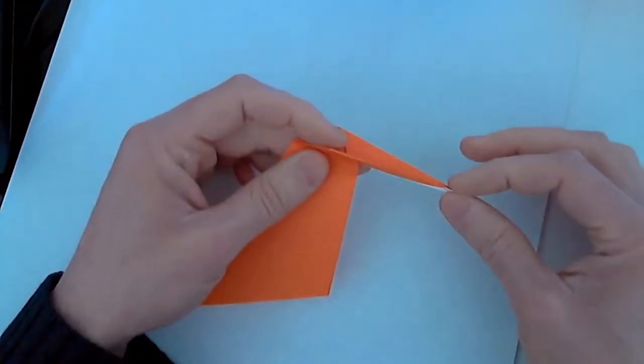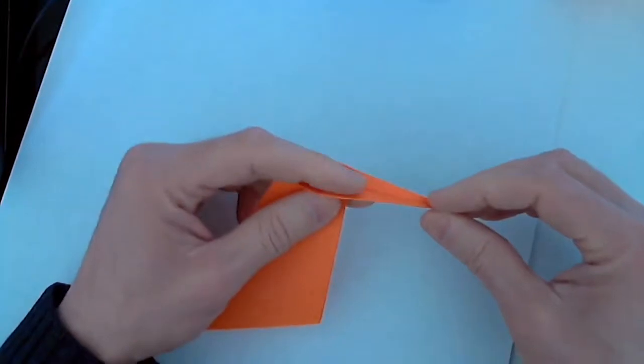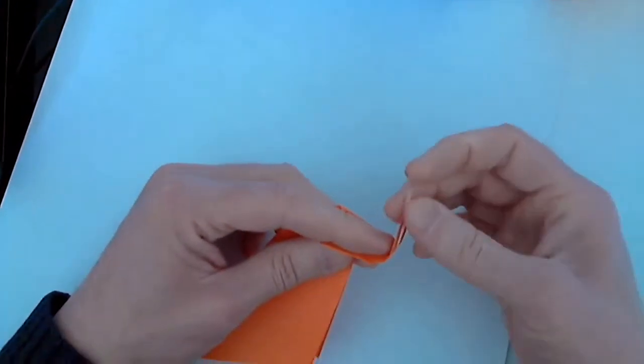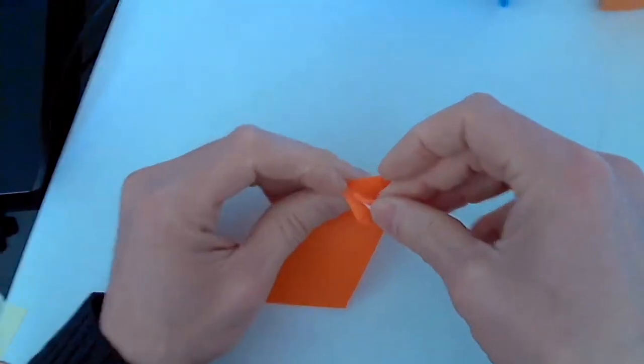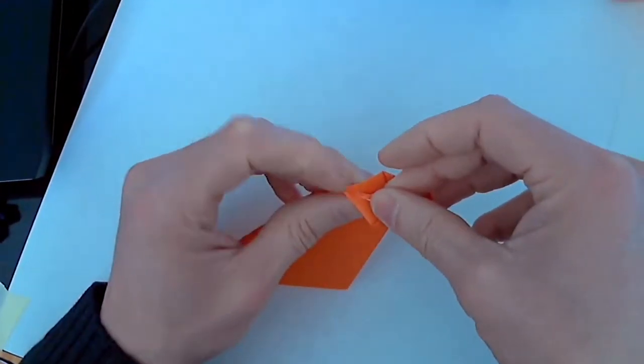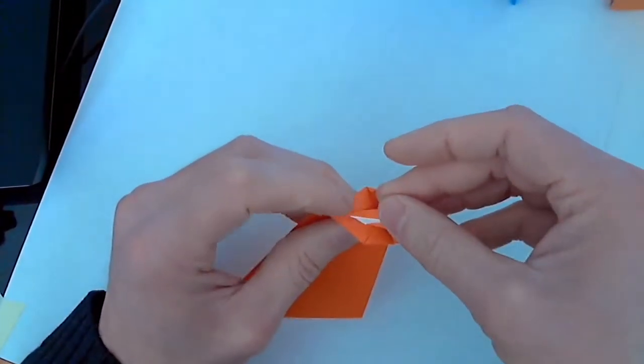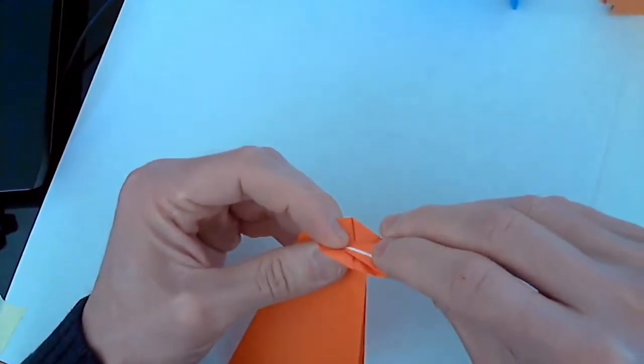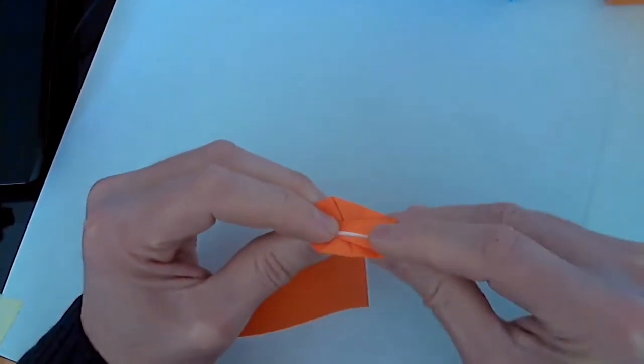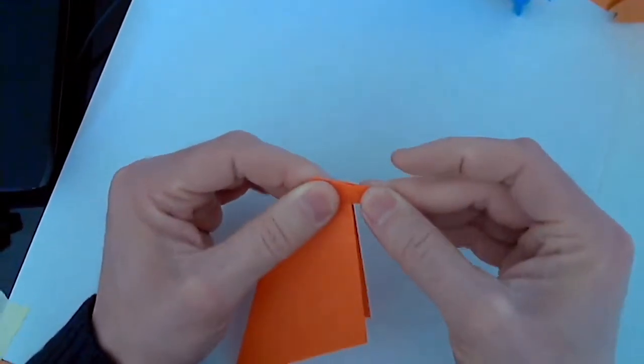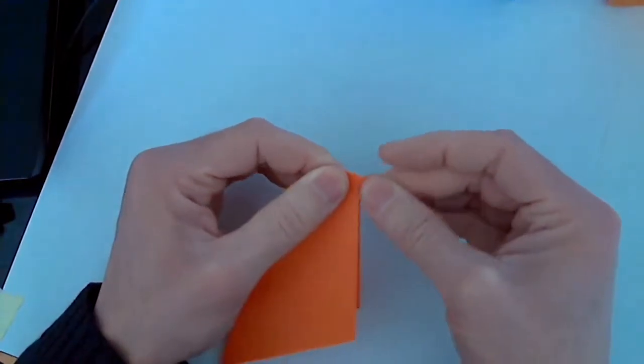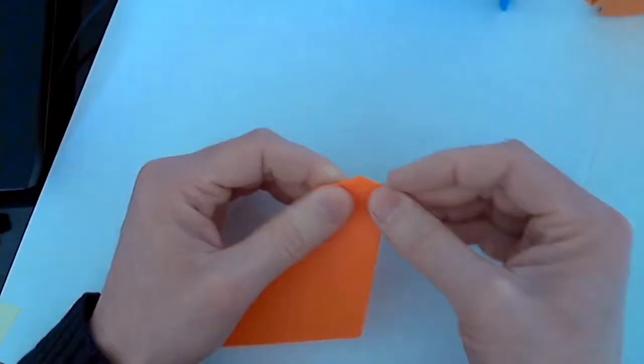Now take this bottom point. If you open this up, take this bottom point and fold it up so that it almost reaches the top over here. Make a nice crease and then fold everything up again. This is going to be the rear legs of the animal.